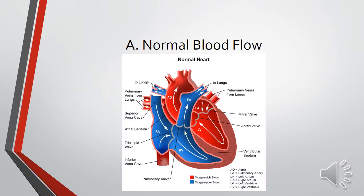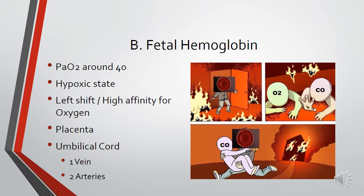Diving right in, we're going to talk about normal heart circulation. Starting with the inferior vena cava and the superior vena cava, those dump into the right atrium, pass through the tricuspid valve into the right ventricle, then up through the pulmonary valve to the pulmonary artery to the lungs, where it picks up oxygen and removes carbon dioxide. It comes back into the left atrium, through the mitral valve into the left ventricle, then through the aortic valve out the aorta and through the coronary arteries, transverse aorta, and down the descending aorta.